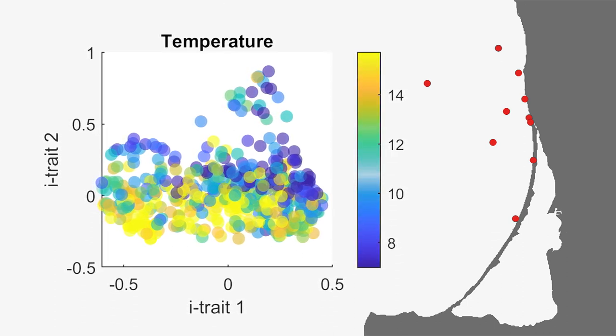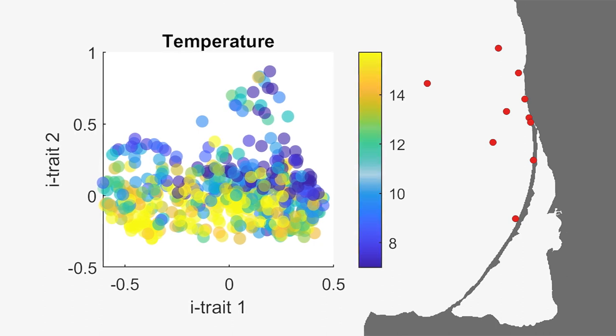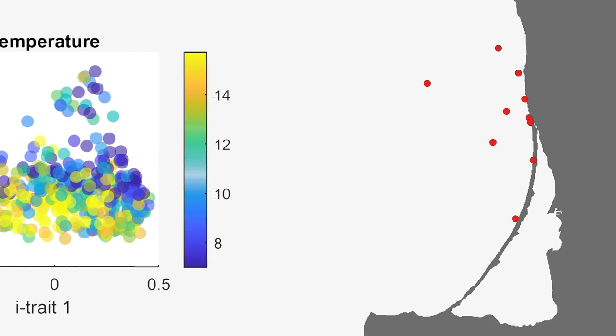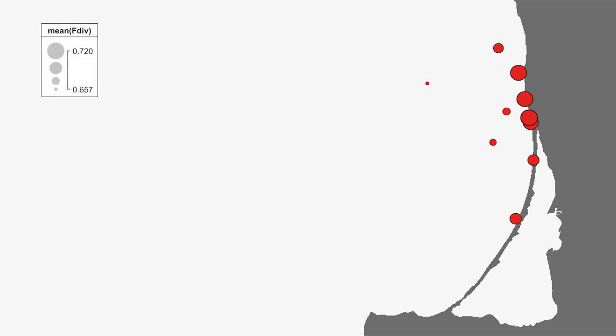Based on the diffusion map alone, we cannot test these hypotheses, but they could be explored with further data, laboratory experiments, or knowledge from the literature. Now finally, let's look at functional diversity. In this map, we have placed larger circles at stations where the functional diversity is higher. There is a clear pattern with less diverse communities out in the open Baltic and more diverse communities closer to shore where stronger spatial gradients exist.